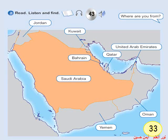Unit 5, Lesson 1, Activity 3. Read, listen and find. 1. Where are you from? I'm from Saudi Arabia.